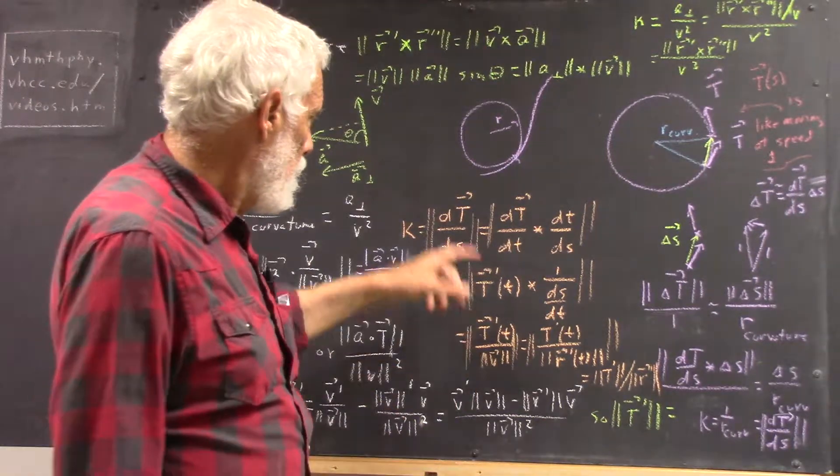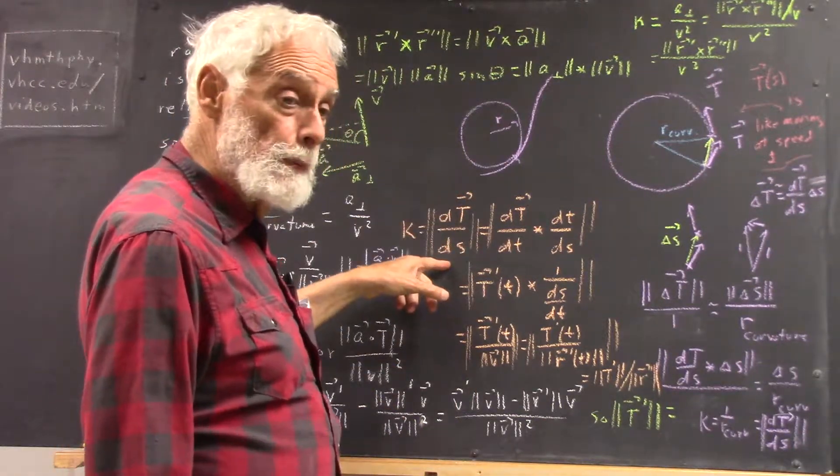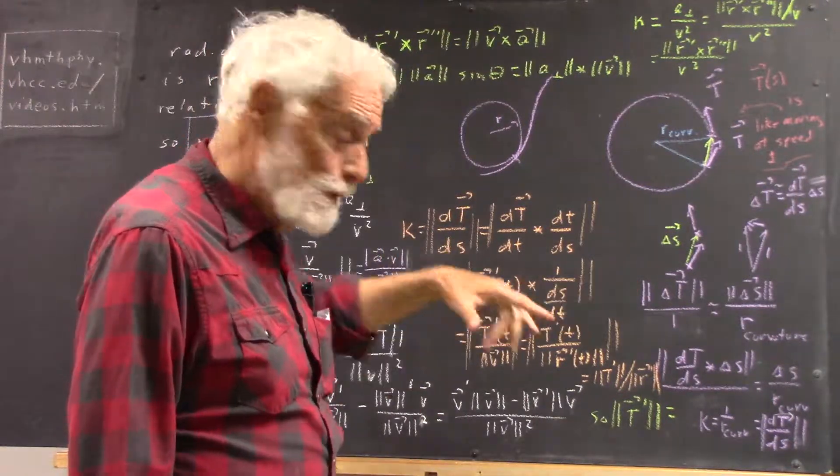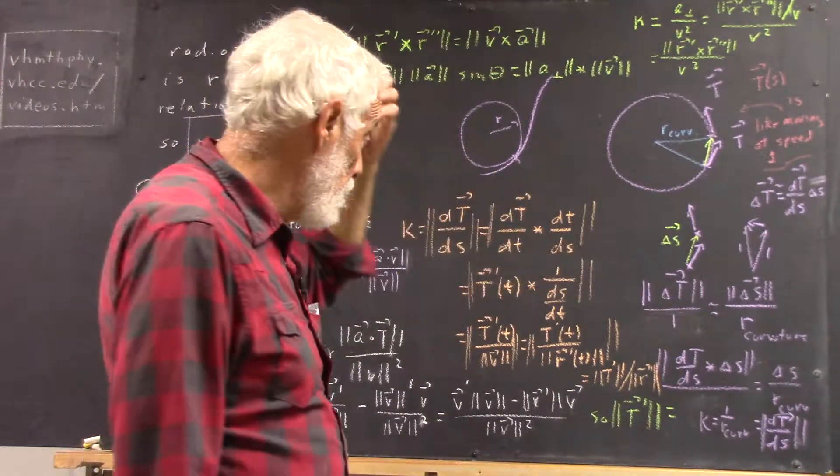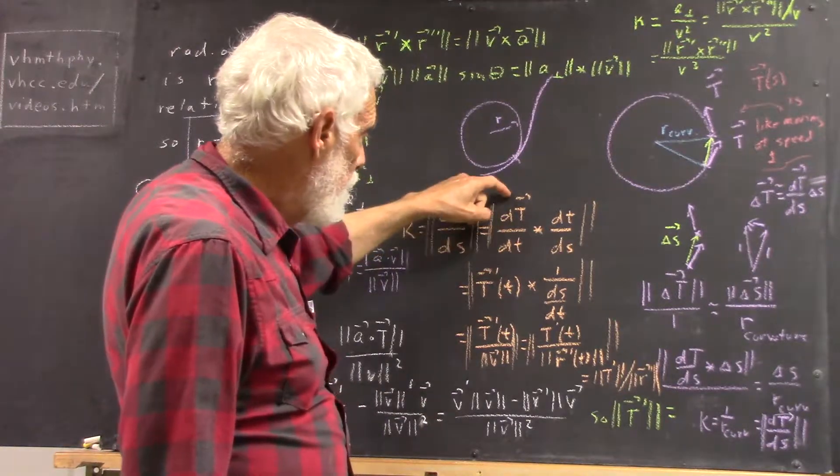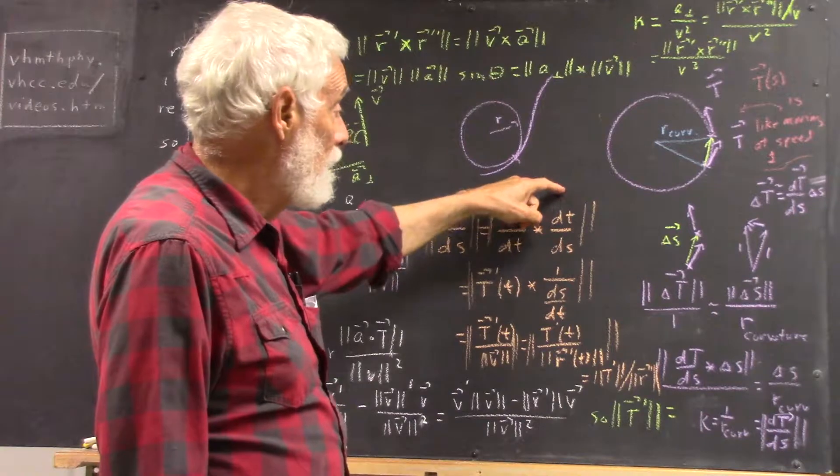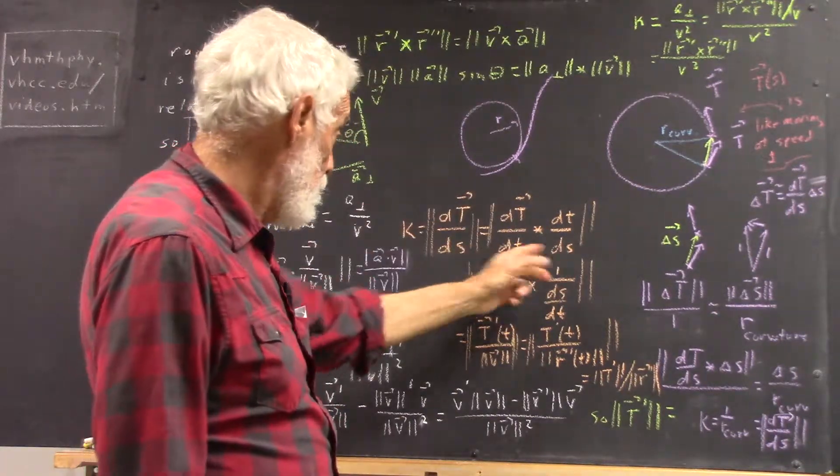Well, the rate of change of unit tangent vector with position s, and s is the position as measured by arc distance along the curve, is just the derivative of the unit tangent vector with respect to time times dt/ds. Just the chain rule.